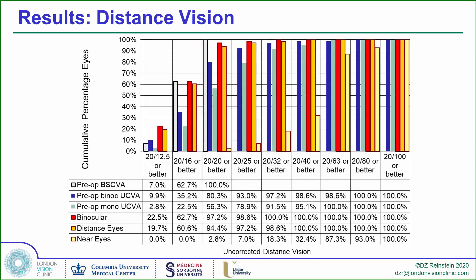Looking at the distance vision results, the post-op binocular distance uncorrected vision was excellent, with 97% of patients seeing 20/20. Interestingly, the monocular distance vision was slightly less because of the loss of summation, and even 87% of the non-dominant near eyes were 20/20 or better at distance.